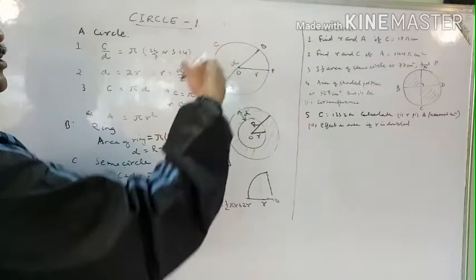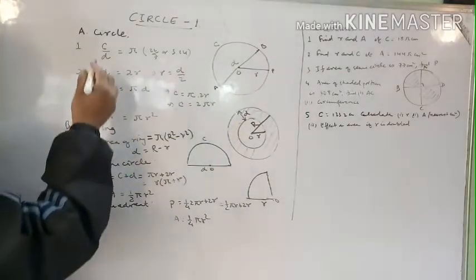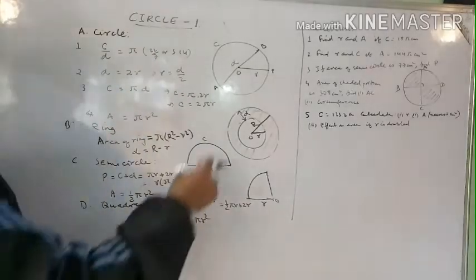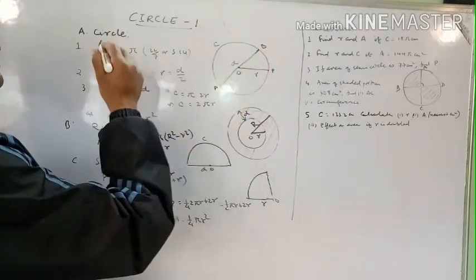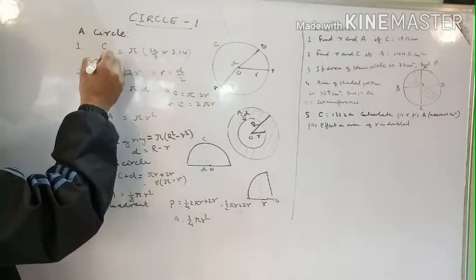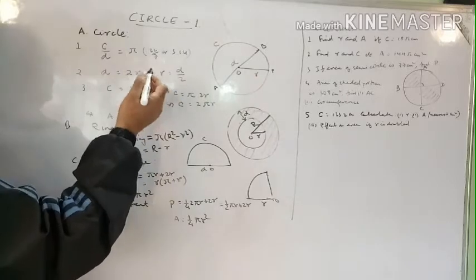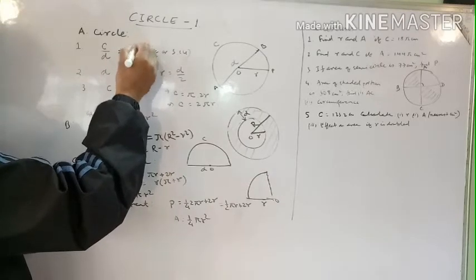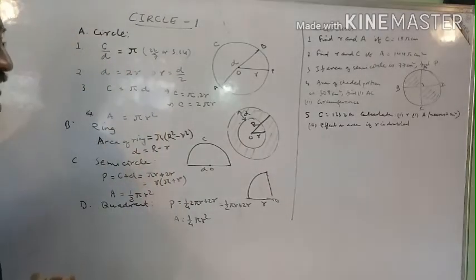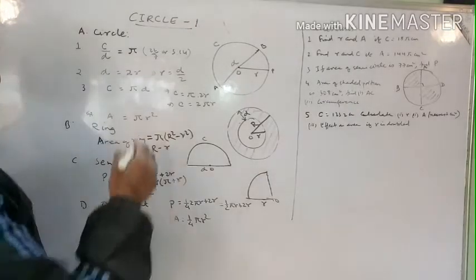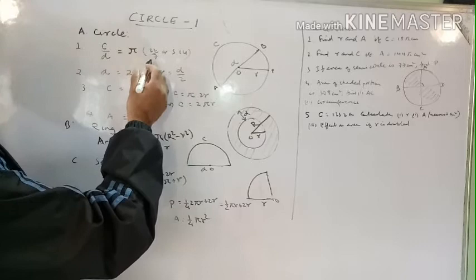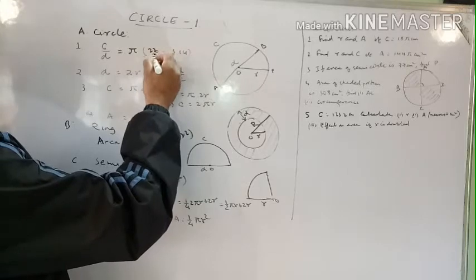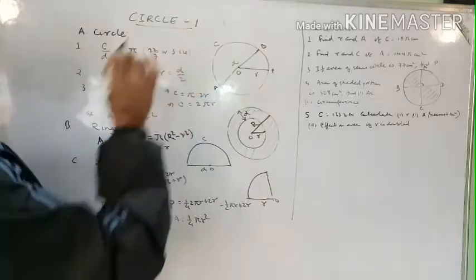In any circle, the ratio of circumference to diameter is always constant, whether you take a small circle or a big circle. That constant is represented by the Greek letter pi. The exact value of pi is not known and cannot be found out, so it is an irrational number. We take approximate values: 22/7 as a fraction and 3.14 as a decimal.